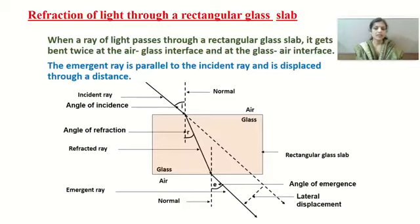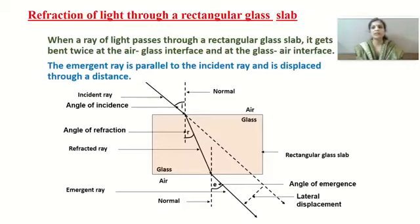The difference between where the refracted ray travels and where it would have traveled in the same medium is called lateral displacement. Because we have kept the glass slab, the ray of light is displaced by some distance, and this displacement is called lateral displacement.